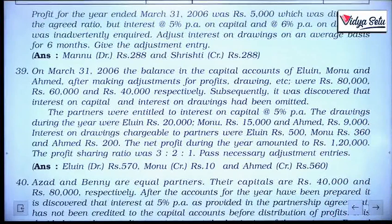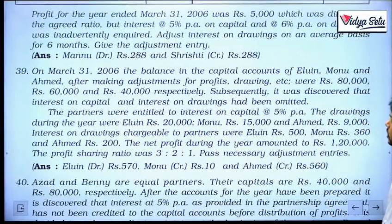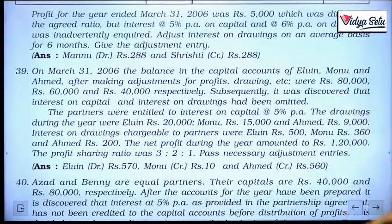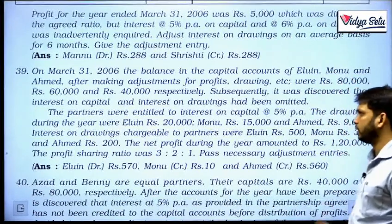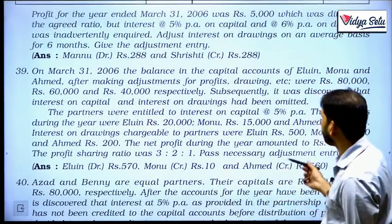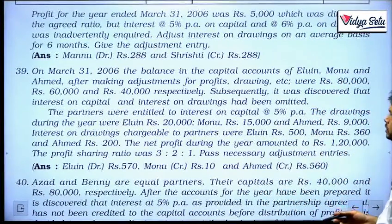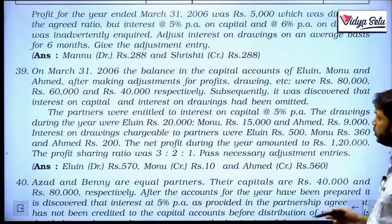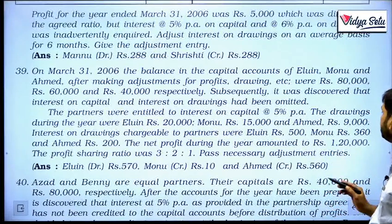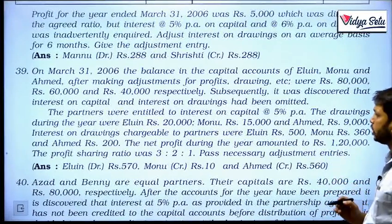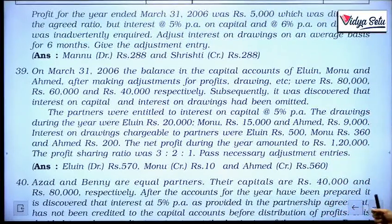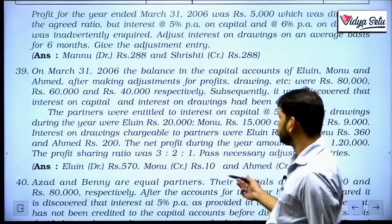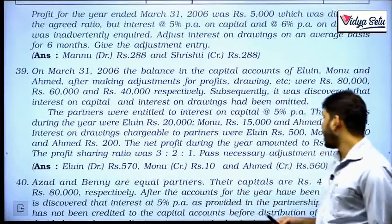This was the capital account balances. Subsequently, it was discovered that interest on capital and interest on drawings had been omitted, so this capital figure is incorrect. Partners were entitled to interest on capital at 5% per annum. The drawings during the year were Elwin 20,000, Monu 15,000, and Ahmed 9,000. Interest on drawings chargeable to partners were 500, 360, and 200. The net profit during the year amounted to 1,20,000. The profit sharing ratio was 3:2:1. Pass necessary adjustment entry.